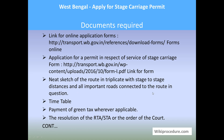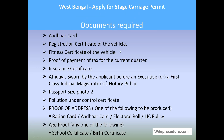You will need: a sketch of the route in triplicate with stages, distances, and all important roads connected to the route in question; timetable; payment of green tax wherever applicable; the resolution of the RTA or STA or the order of the court; registration certificate of the vehicle; fitness certificate of the vehicle; proof of payment of tax for the current period; insurance certificate; an affidavit sworn by the applicant before an executive or first-class judicial magistrate or a notary public; passport-size photo; pollution under control certificate; proof of address (any one of: ration card, electoral roll, LIC policy); and age proof (any one of: school certificate or birth certificate).